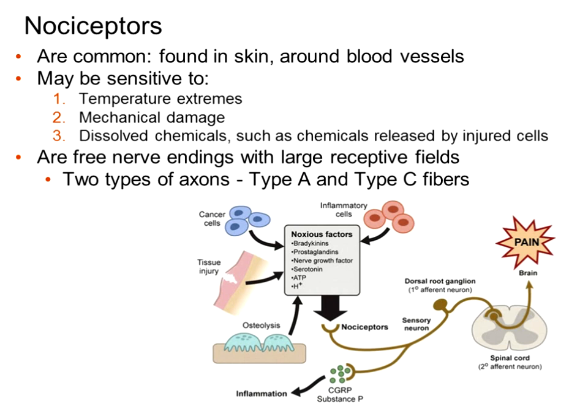Nociceptors are common in the skin and external integumentary system, with a few around blood vessels in the visceral system. The visceral system and skin work in combination — this is part of why when someone has a heart attack, they feel pain in the left arm, shoulder, chest, or neck. These nociceptors, to amplify their signal when pain originates in the visceral area inside the abdominopelvic cavity, piggyback with pain pathways tied to neurons and receptors in external skin areas.